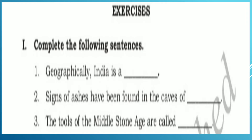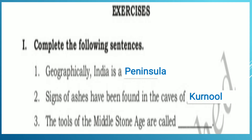Let's move to exercises. First one: complete the following sentences. First, geographically India is a — answer: peninsula. Geographically India is a peninsula. Second, signs of ashes have been found in the caves of — answer: Karnool. Third, the tools of the middle stone age are called — answer: delicate stone tools.